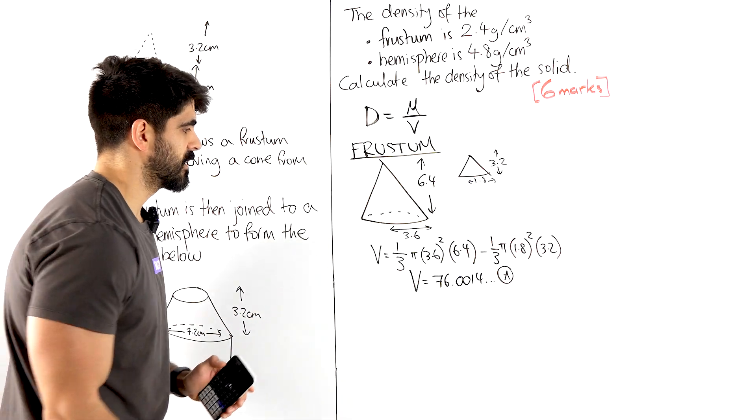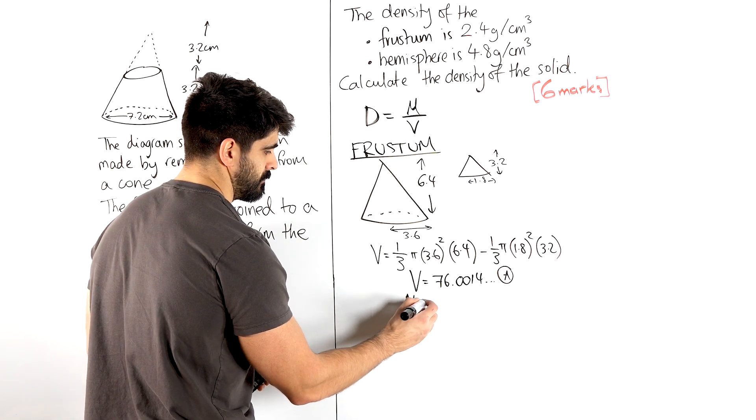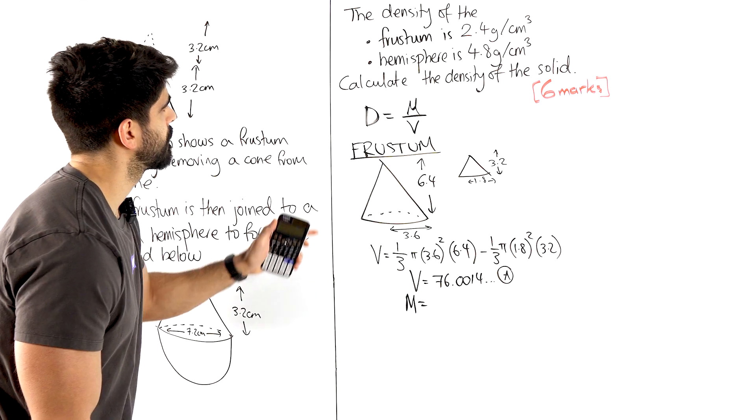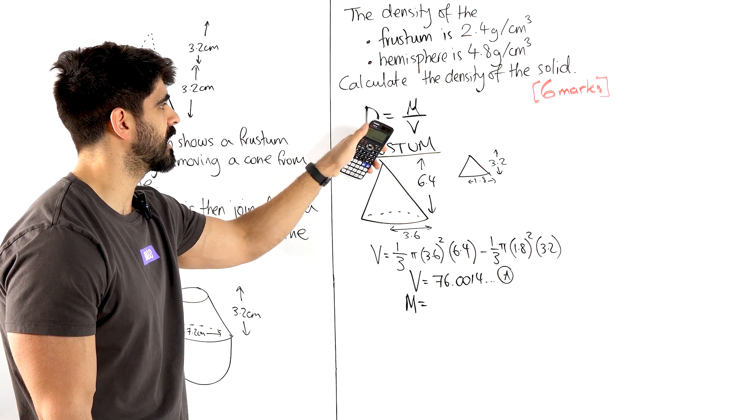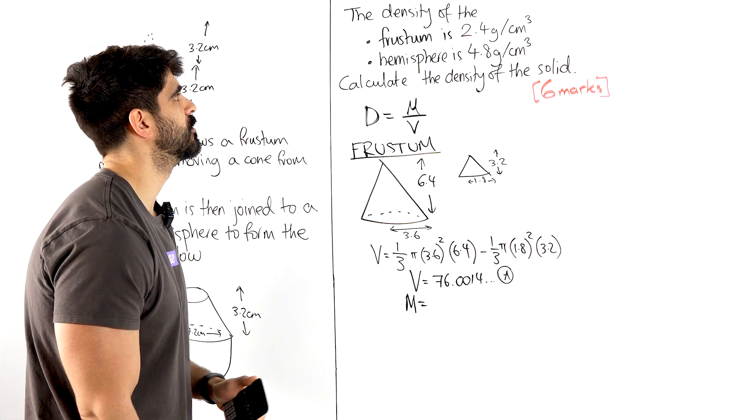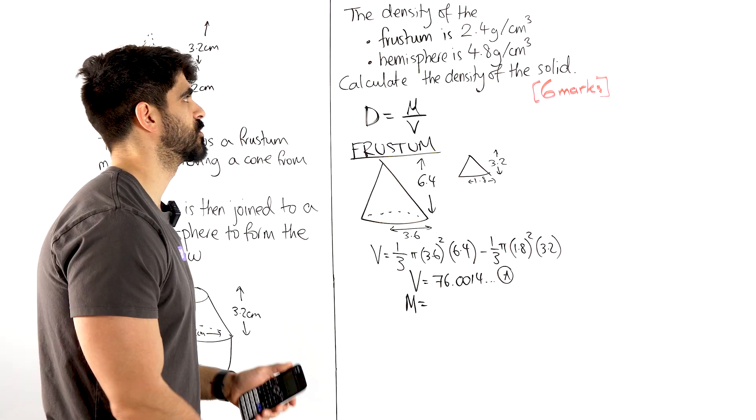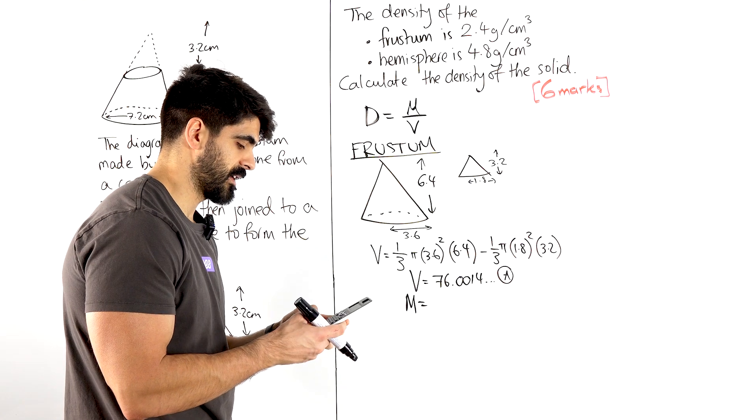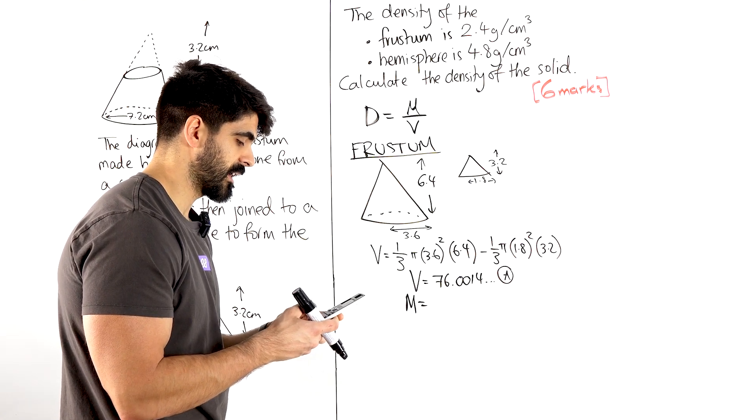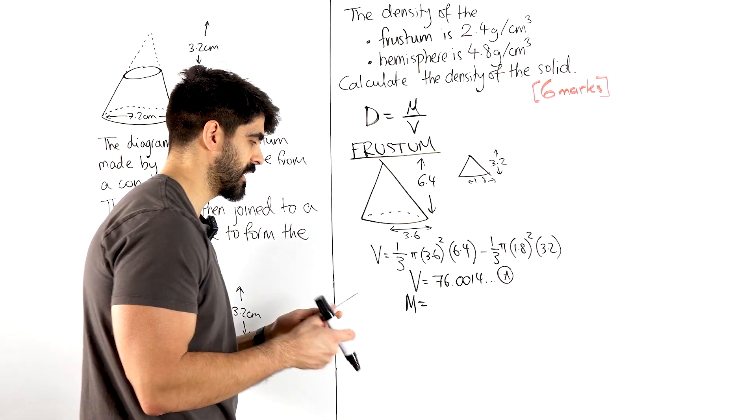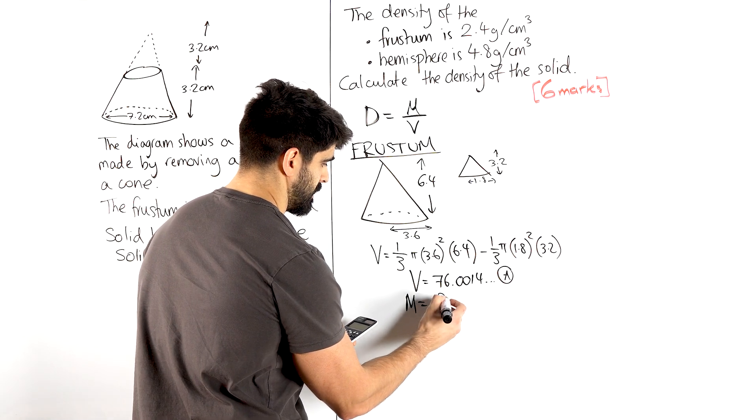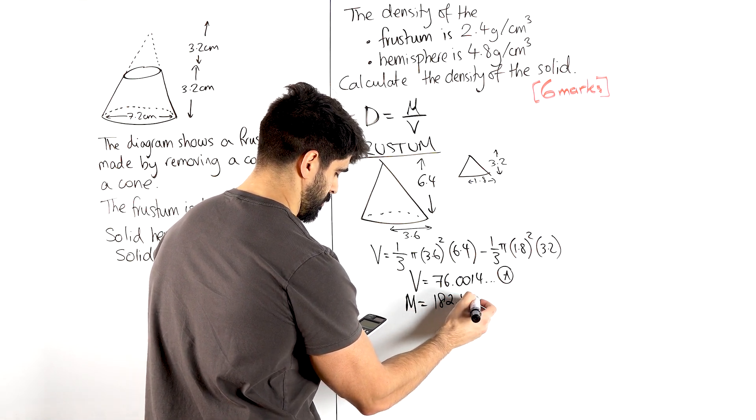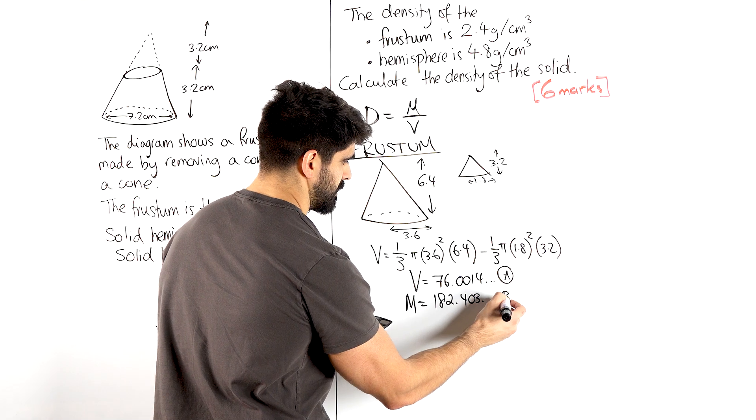So now that I've stored that as A, I can now work out the mass of the frustum. Now the mass of my frustum is D times V, density times the volume. And the density of that frustum was 2.4. So times by 2.4, I get 182 which I'm going to store that as B. So 182.403 dot dot dot, store that as B.